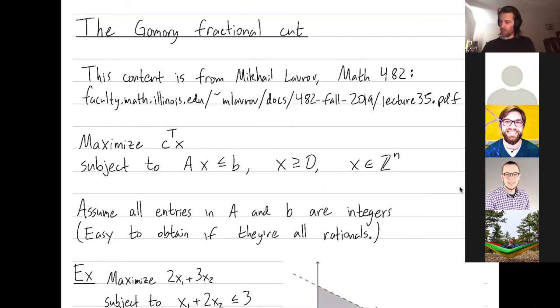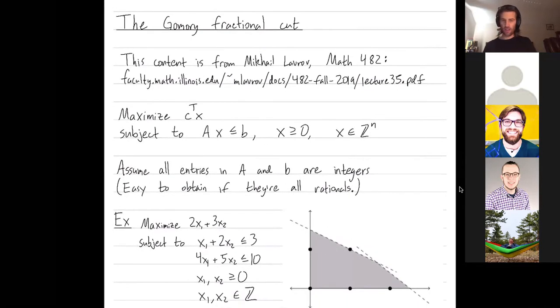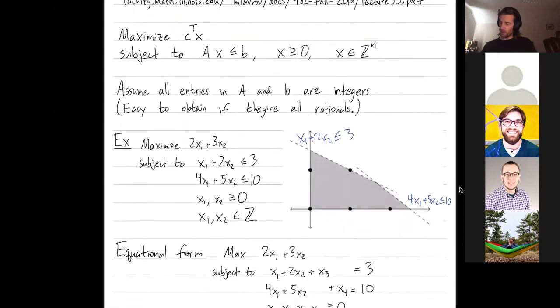So let's do an example. We're going to maximize 2x1 plus 3x2 subject to the following constraints. This line here gives me x1 plus 2x2 is at most 3 and this dotted line down here gives me 4x1 plus 5x2 is at most 10. And then I want my variables non-negative and to be integers. So really, I only have five possible solutions.